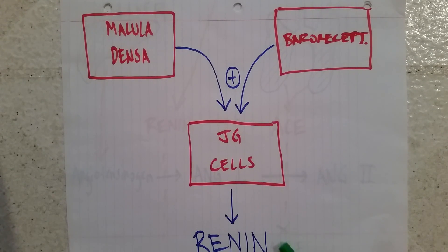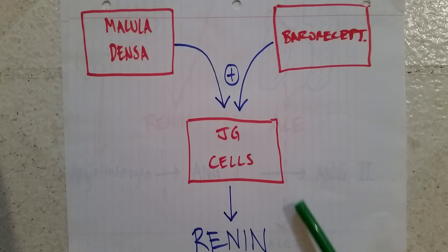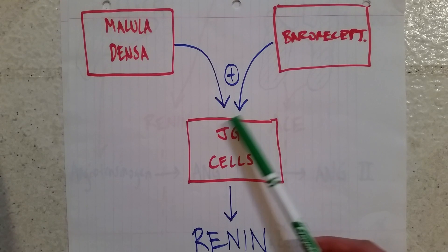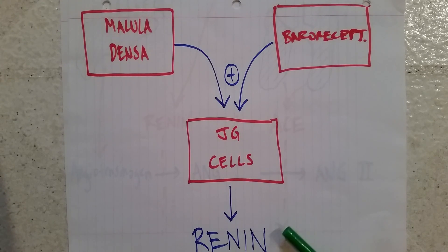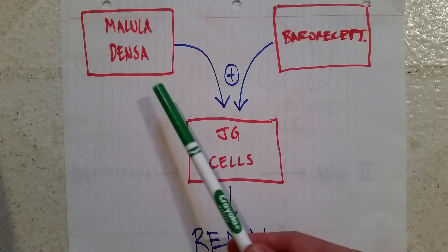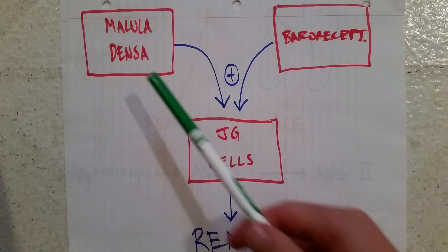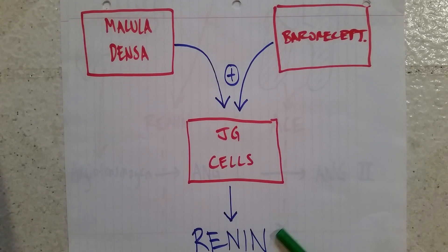Renin is the primary starting protein in this whole system and is made by JG cells. These JG cells get activated to make renin by two main mechanisms. The first is by the macula densa cells, which are located in the distal convoluted tubules of the nephron. They sense how much sodium is inside the filtrate, and if not enough sodium is present, they know blood pressure is not where it should be and release prostaglandins to activate the JG cells to make renin.